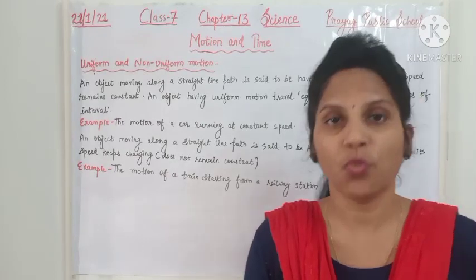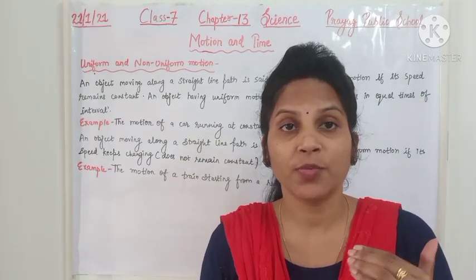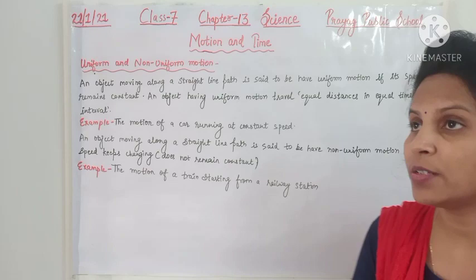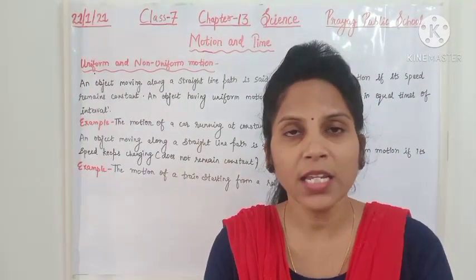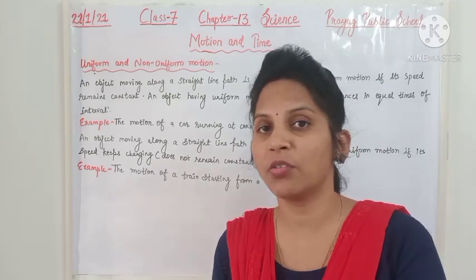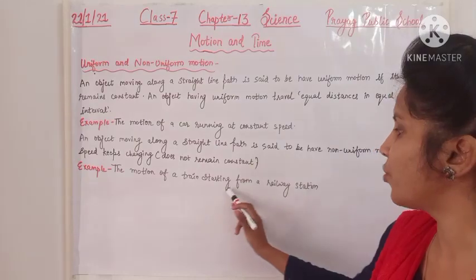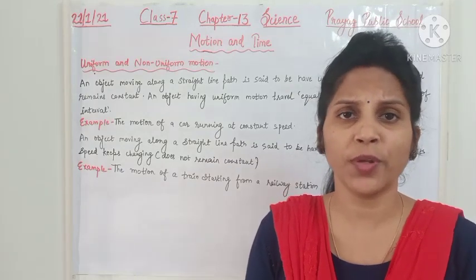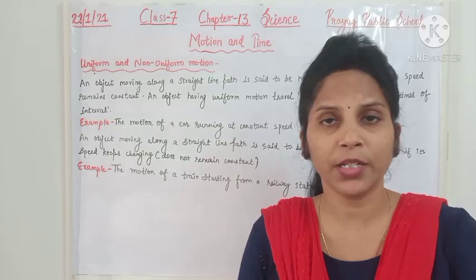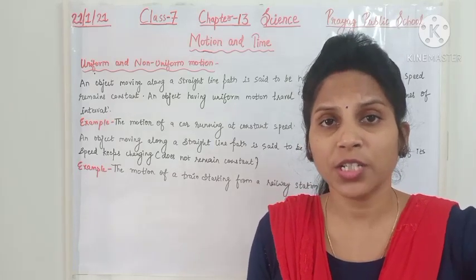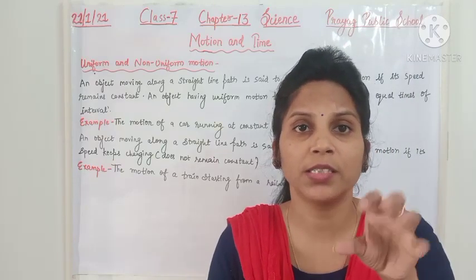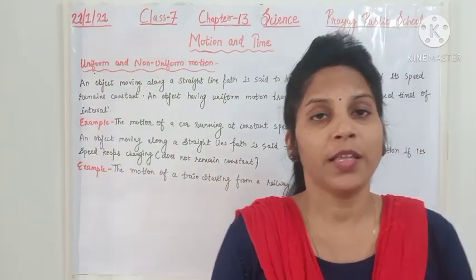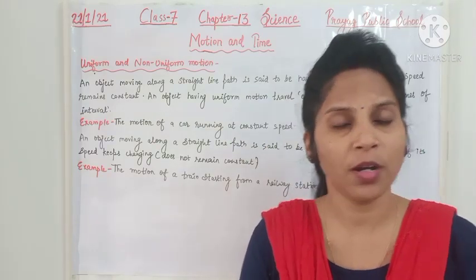In non-uniform motion, the speed keeps changing — sometimes it may increase, sometimes it may decrease. For example, the motion of a train starting from a railway station: when it starts, the speed is slow, then it increases, and when the next station comes, the speed decreases again. So the type of motion in which the speed of the object is not constant is called non-uniform motion.